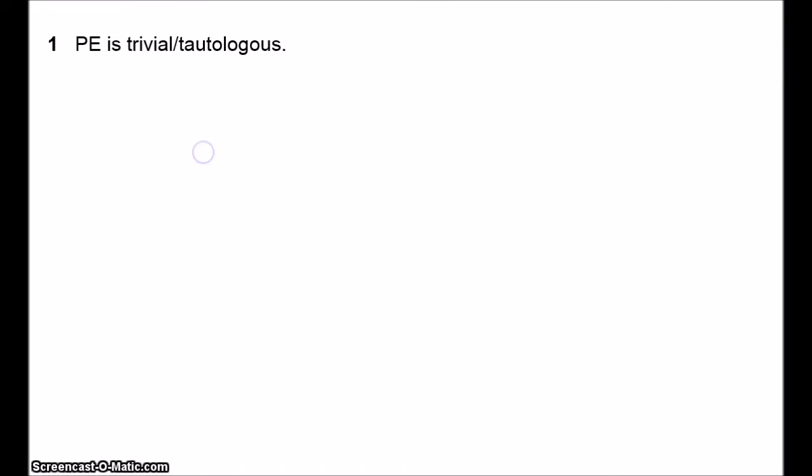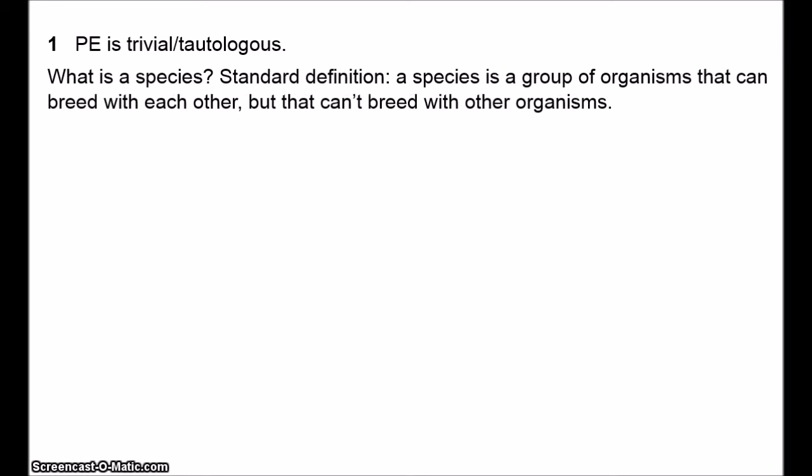One critique suggested by Levington and Simon is that punctuated equilibrium is theoretically empty or trivial. To understand their critique we need to think a little bit about species. One of the central questions in biology is how to define species — what exactly is a species? This is known as the species problem. I've got a couple of videos on this problem if you're interested.